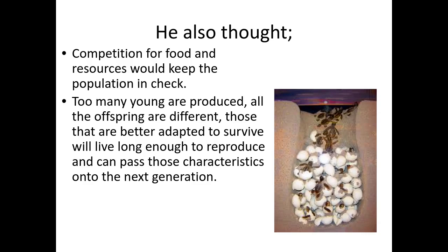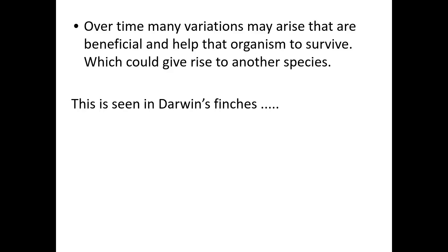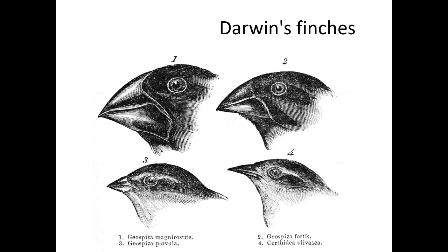Those that are better adapted to survive are more likely to survive and pass on those alleles to the next generation. Those less adapted to the environment are more likely to die and not pass on their alleles. Over a long time, many beneficial variations arise, which could give rise to new species — as seen in Darwin's finches, which became so specialised they could no longer interbreed and are now classed as different species.